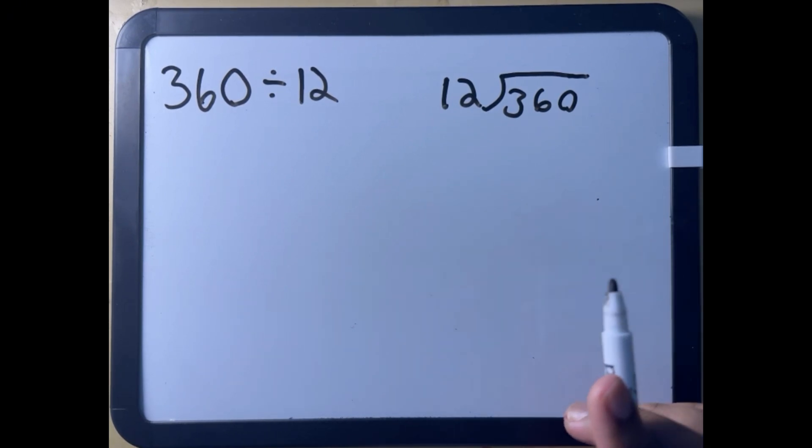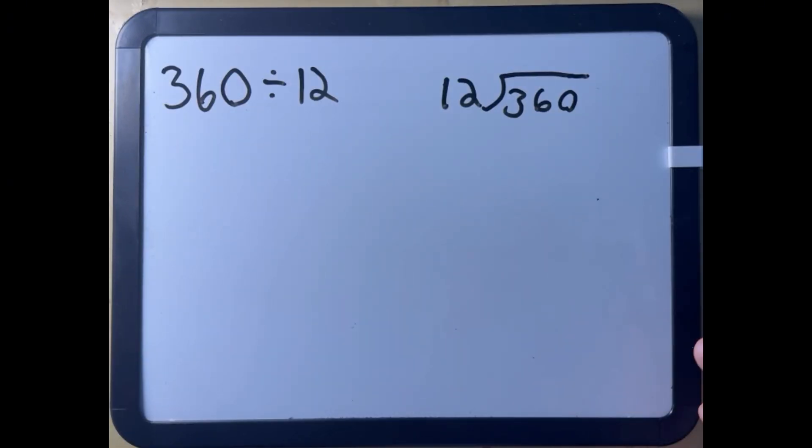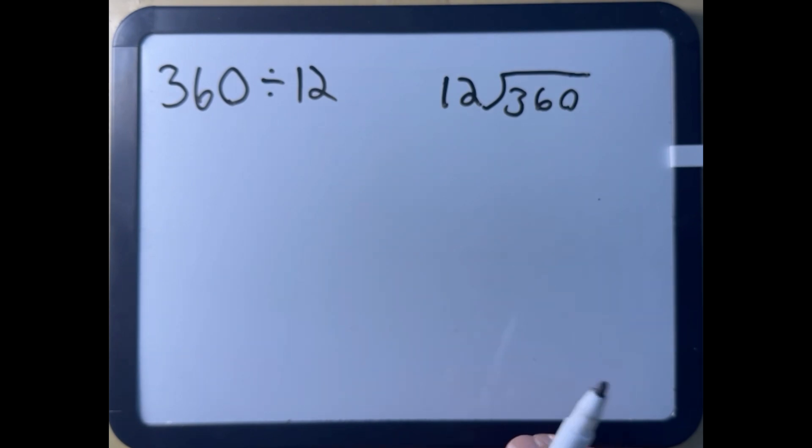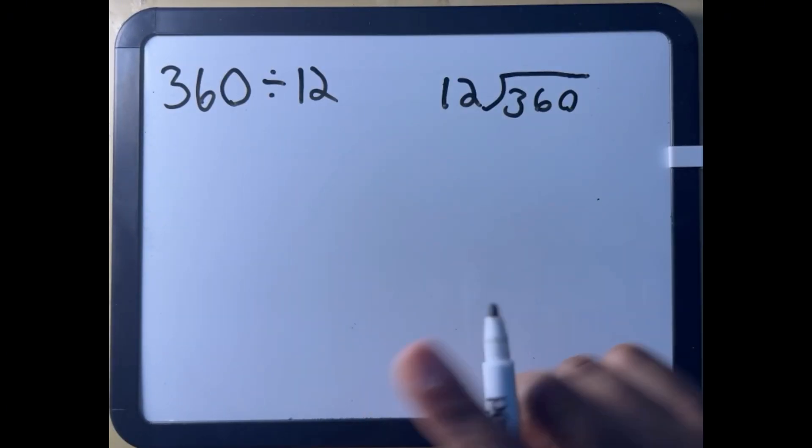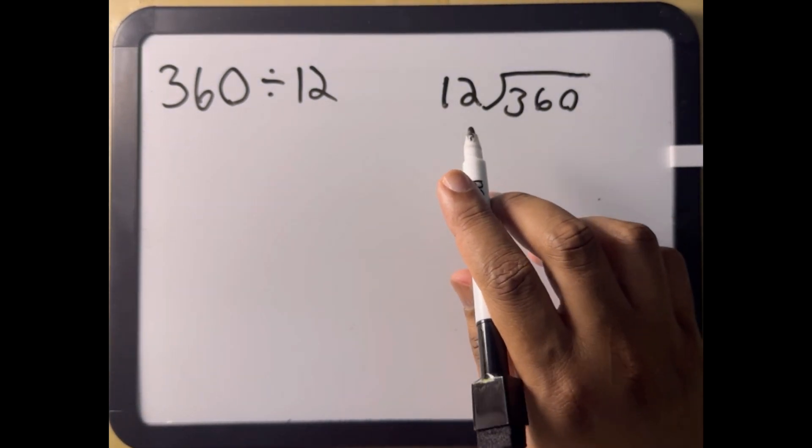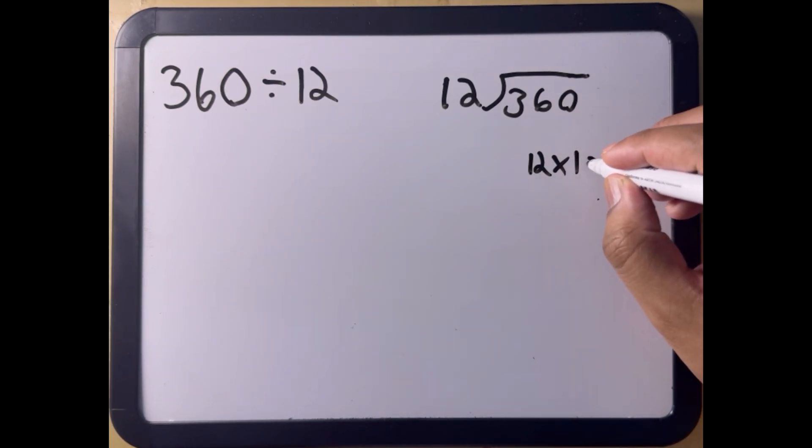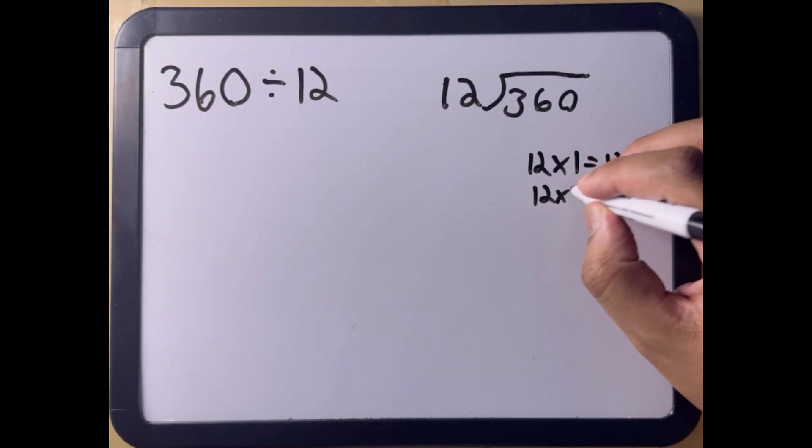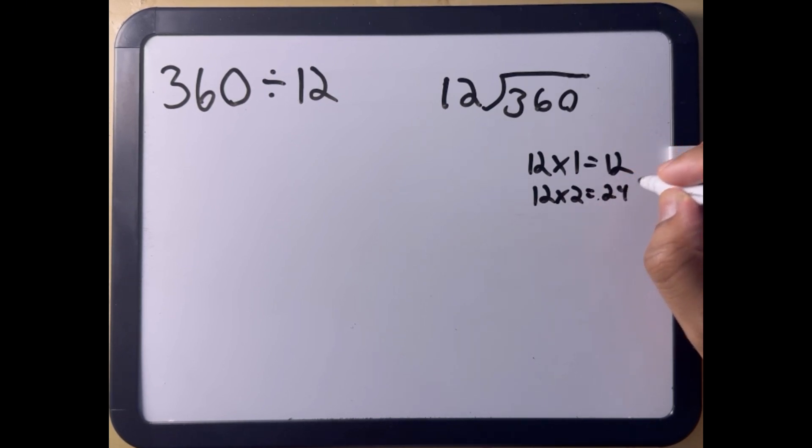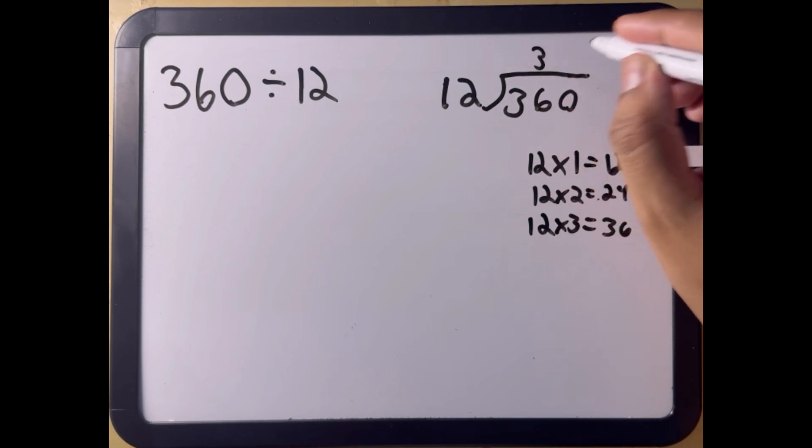So we want to see how many times 12 can go into 360. Now that's a large number, and your multiplication tables probably, if you've memorized them, probably only go up to about 12 times 12, which would be 144. So this is a larger number. So how would we figure this out? First, we see how many times 12 goes into 3, which would be 0. So how many times is 12 going into 36? Let's see. 12 times 1 is 12. 12 times 2 is 24. 12 times 3 is 36. 12 goes into 36 three times.